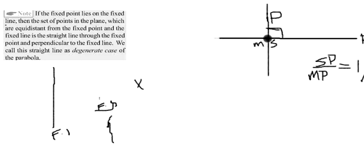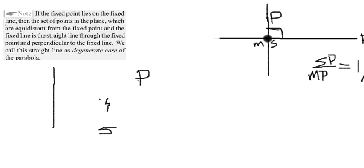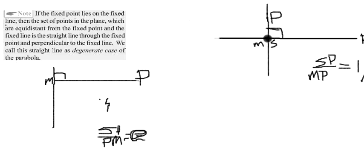The locus of points which maintain a constant ratio — I'll call the fixed point S and a general point on the locus P. The distance between them is given by SP, and the perpendicular distance from this locus point to the fixed line — where M is the point of intersection — is given by PM. This ratio SP by PM will be constant.